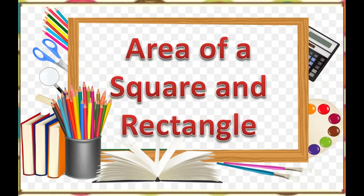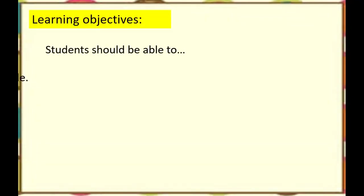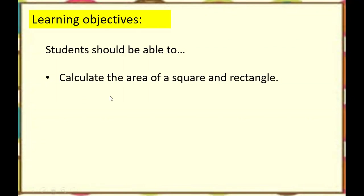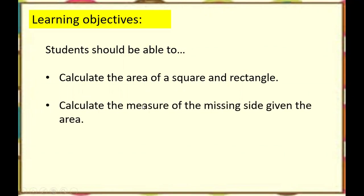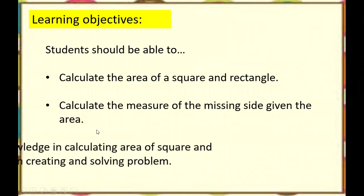Good morning, Year 6! Today we're going to discuss how to calculate the area of a square or a rectangle. Previously you learned how to find the perimeter of polygons and compound shapes. This time you're going to learn how to find the area of a square and rectangle, and later the area of compound shapes. Our learning objectives are: calculate the area using a formula, find the missing side given the area, and solve word problems.